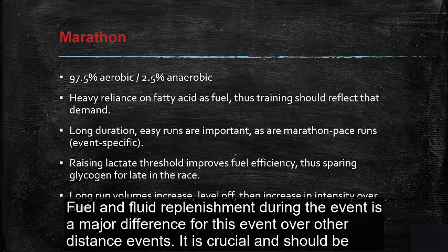The marathon is about 97.5% aerobic and 2.5% anaerobic, with heavy reliance on fatty acids as fuel — so training should reflect that demand. Long-duration easy runs are important at marathon pace. Raising the lactate threshold improves fuel efficiency, sparing glycogen for later in the race. Long run volumes increase, level off, and then intensity increases over time — teaching the body to sustain and fluctuate its energy systems so athletes adapt to the demands of the event.